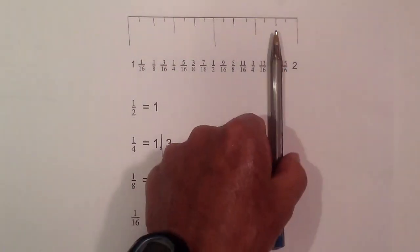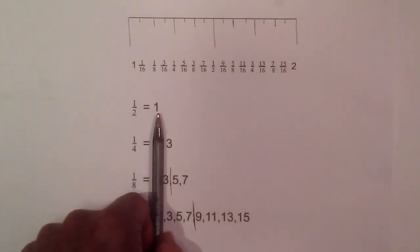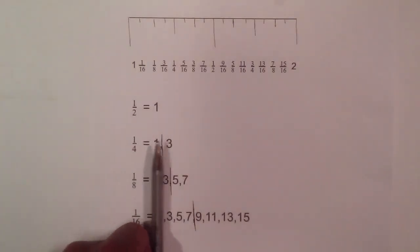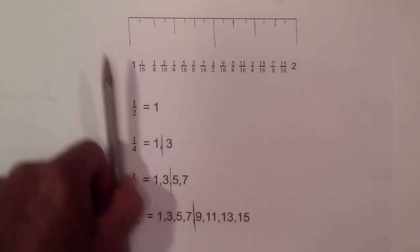So again, the patterns go like this. One half, you only have one. One fourth, you have one, three. One eighth, one, three, five, seven. And one sixteenth, one, three, five, seven, nine, eleven, thirteen, fifteen.